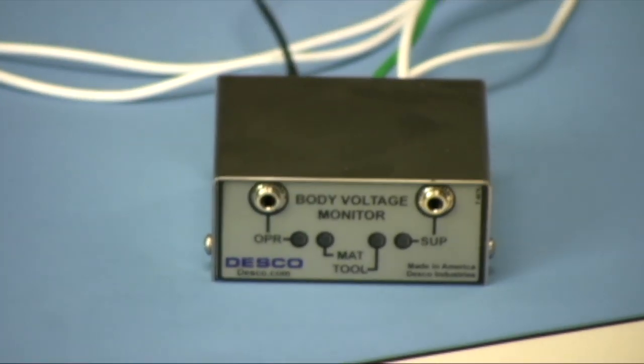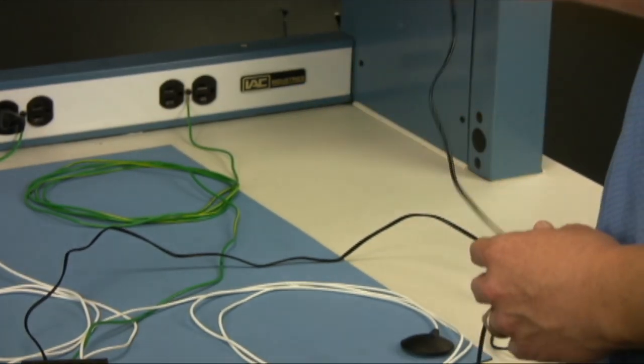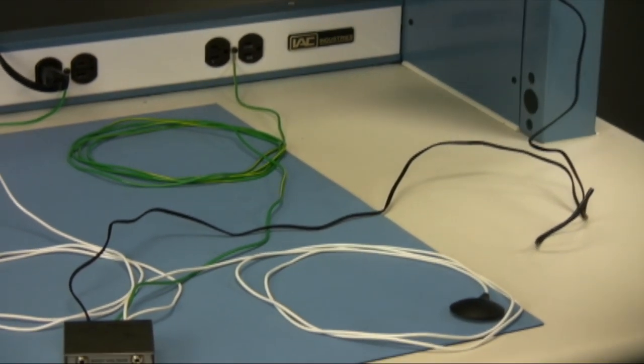The Desco Model 19241 Body Voltage Monitor is a single station continuous monitor for an operator, ESD work service, and tool ground.